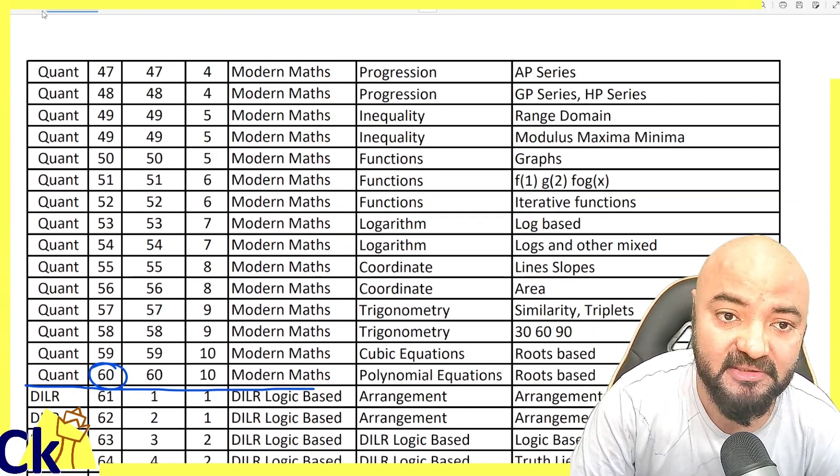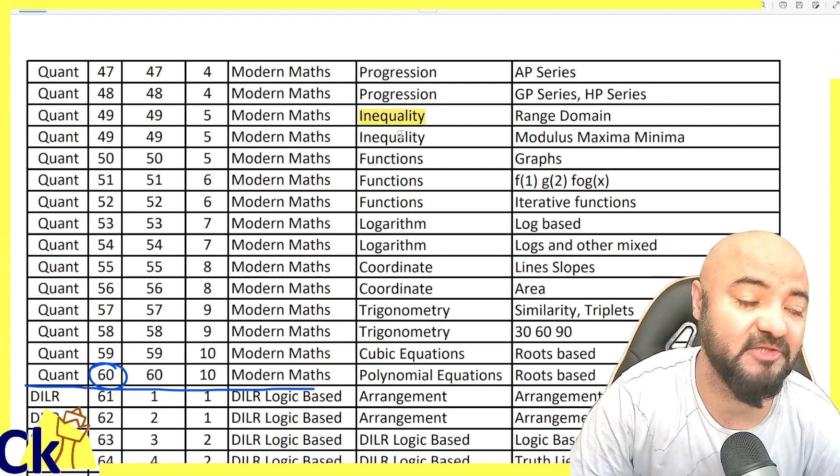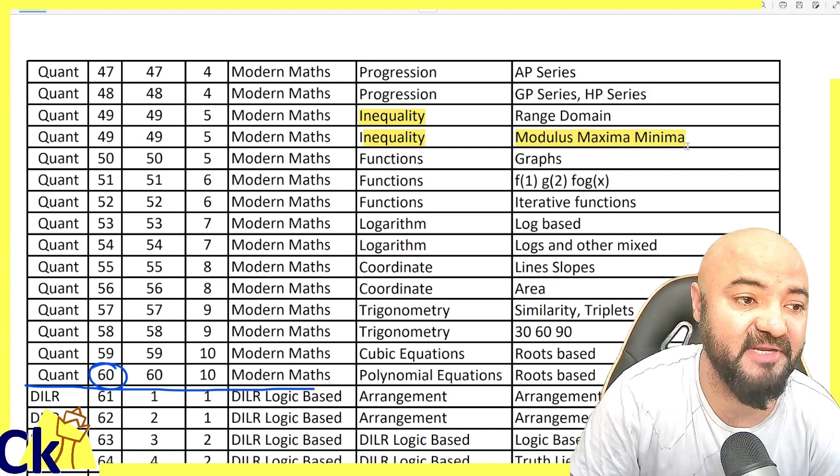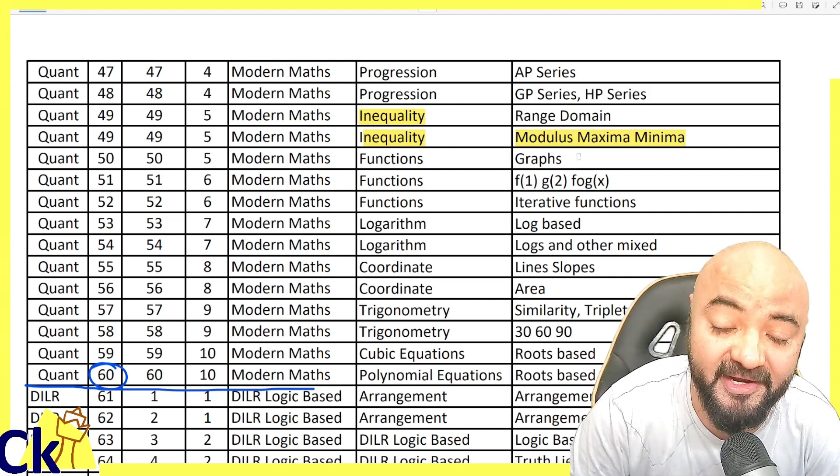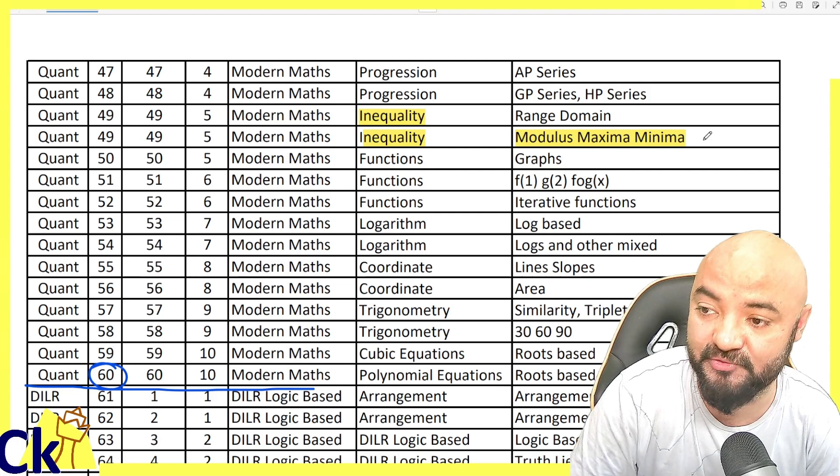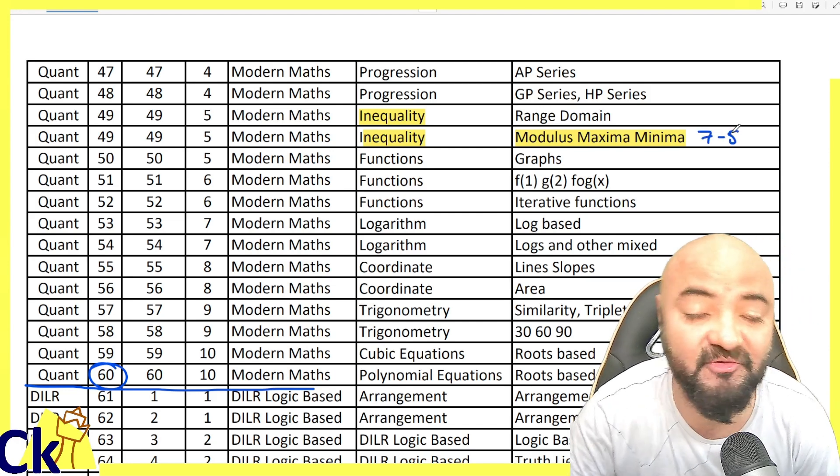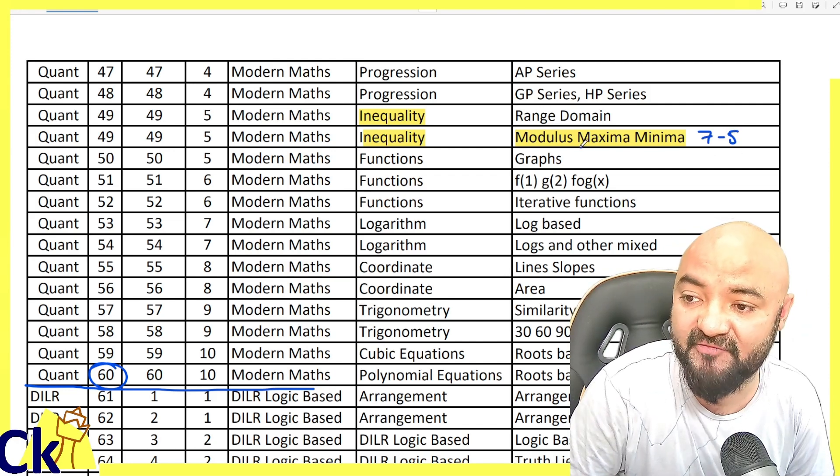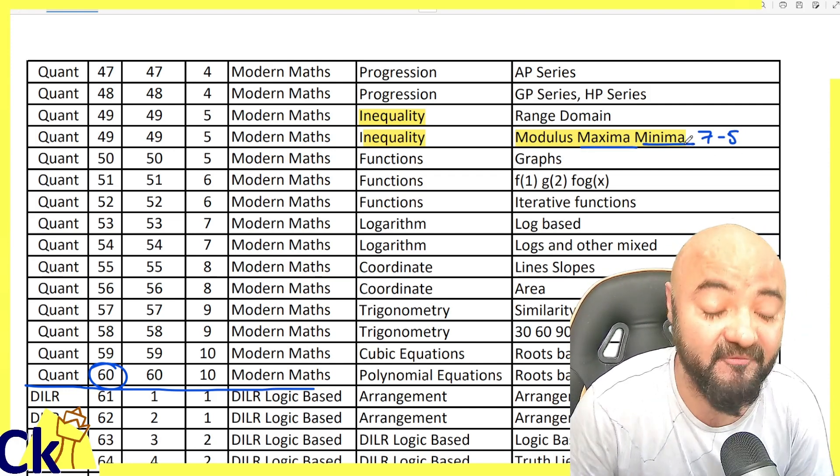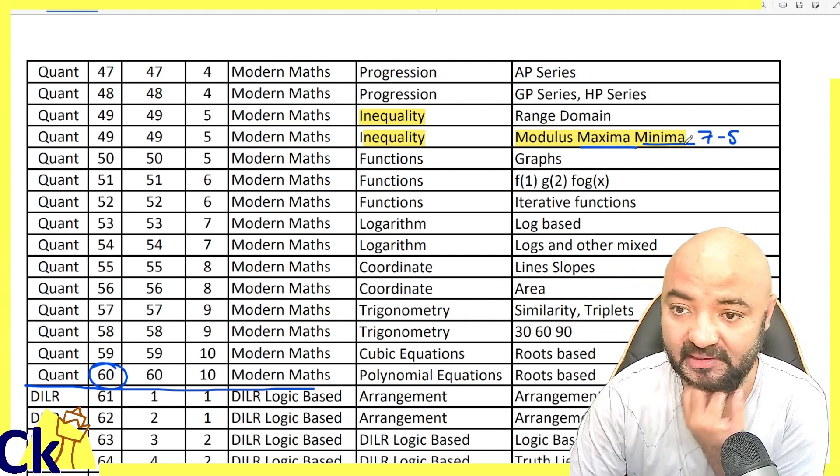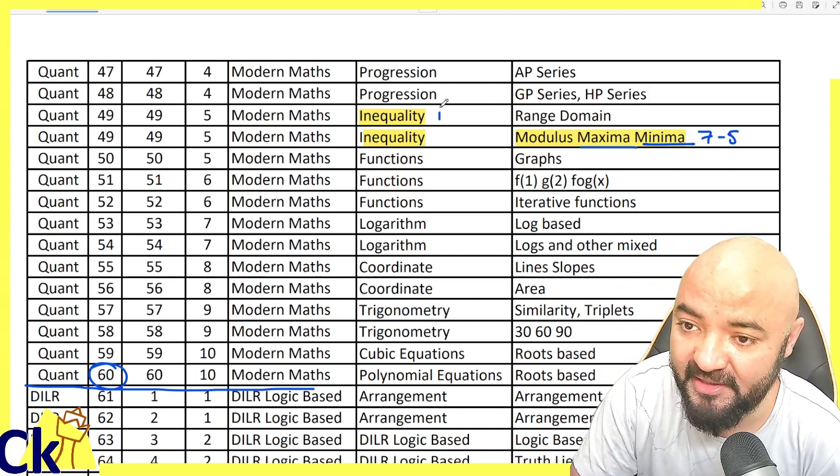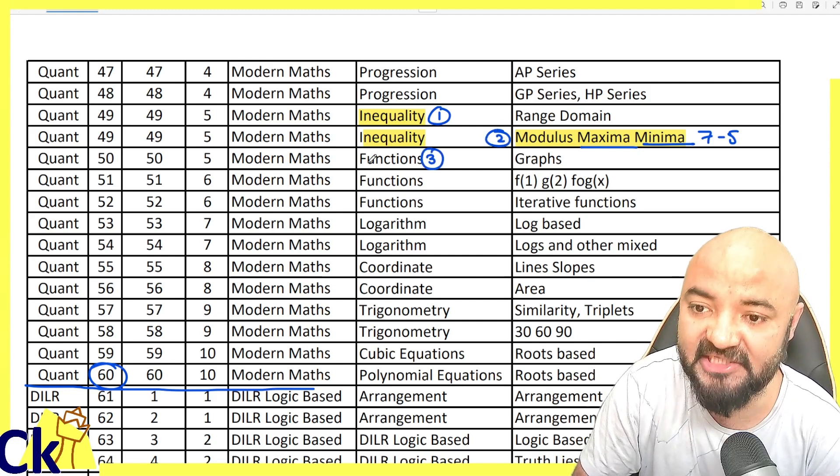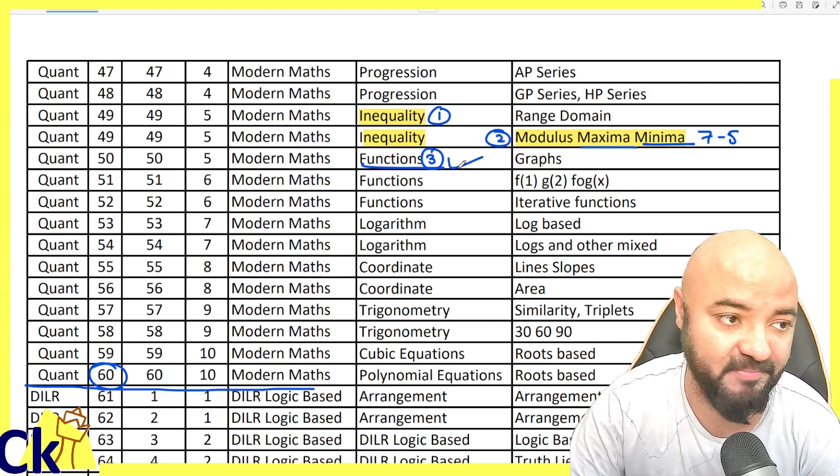Number one on the list is inequality - one or two questions come regularly. Second topic is modulus and maximum minima. You will find at least five to seven questions in CAT paper every year which say 'find the maximum value' or 'minimum value,' so you have to prepare maximum minima. Number three is function graph, another very important topic.